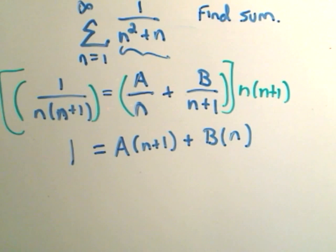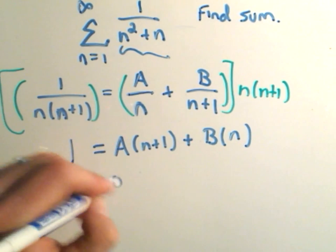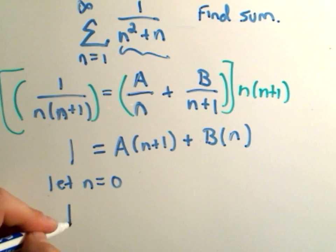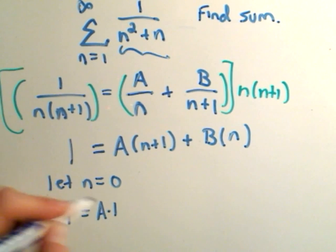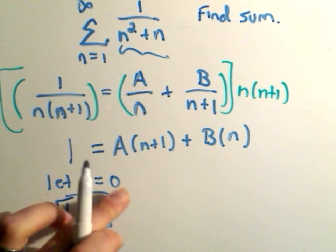So to figure out A and B, we can just be clever. If we let n equals 0, notice on the left side we'll get 1. On the right side, we'll just get A times 1. So we'll get simply that A equals 1.